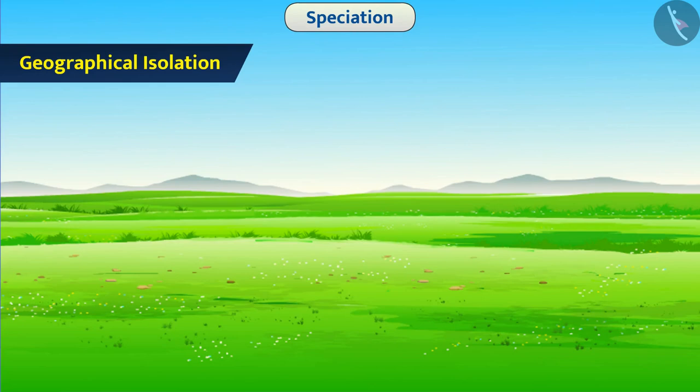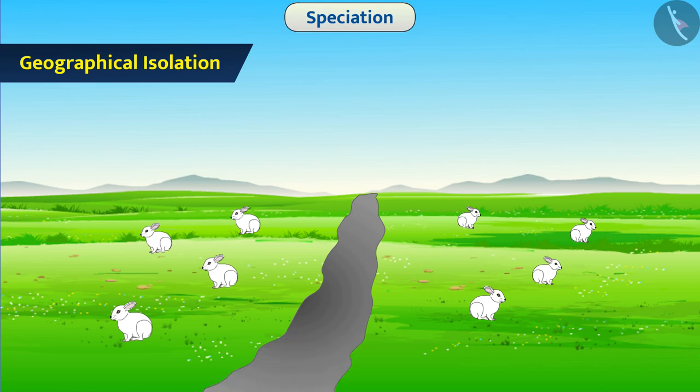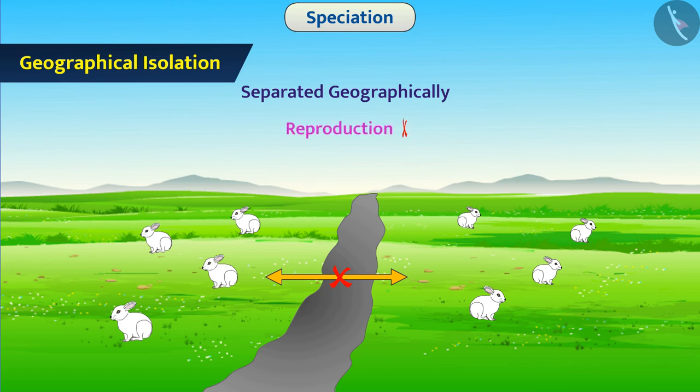Geographical isolation: Due to various reasons, such as availability of food, the population of organisms gets divided into two parts. Many times, geographical situations, such as development of deep trenches, obstruct the contact between the two populations. We say that the two populations are separated geographically. Due to this, the organisms of two groups cannot reproduce with each other, and thus, the genes of one group cannot be transferred to the other.